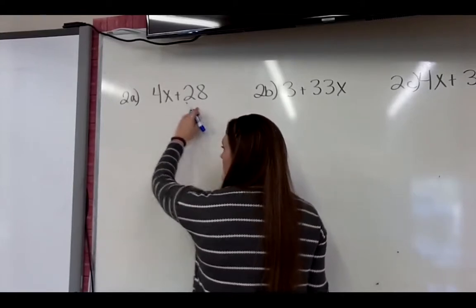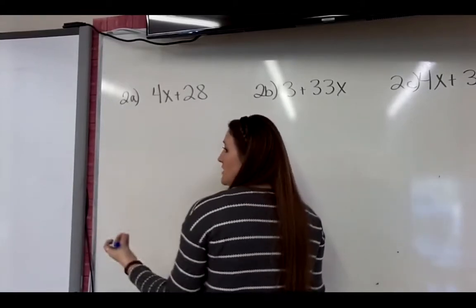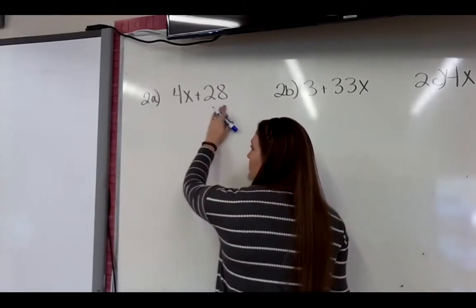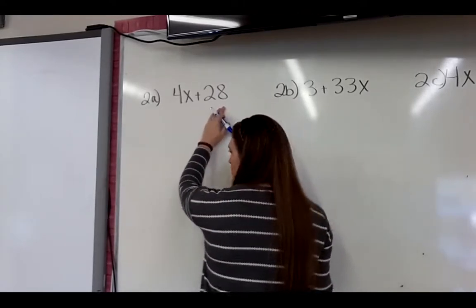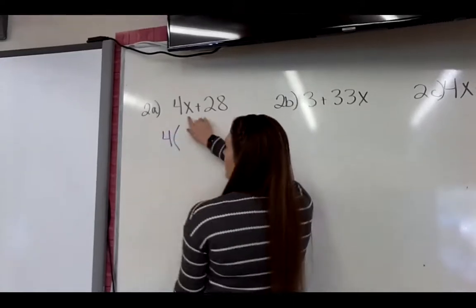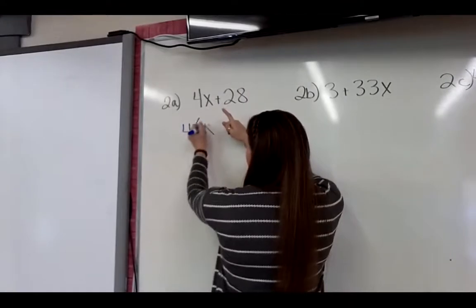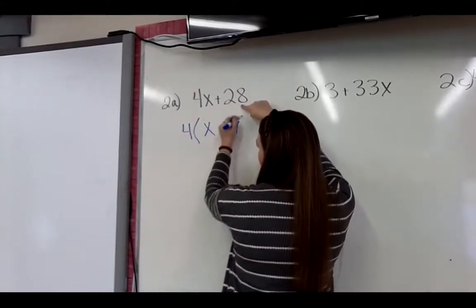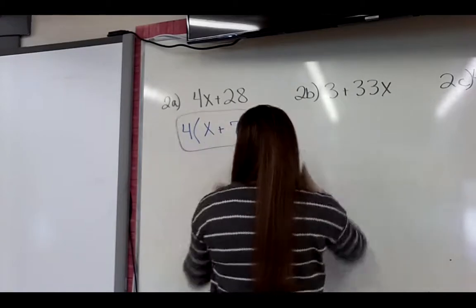So I can take a 4 out of both of these numbers, and it works. So that's what I'm going to factor out. So I have parentheses, 4x divided by 4, I'm left with x, plus 28 divided by 4, I'm left with 7. That is my answer.